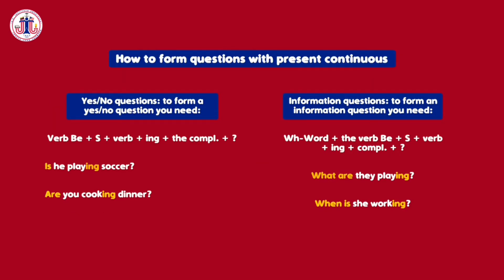How to form yes/no questions with present continuous: you need the verb 'be' plus subject plus the verb plus -ing plus the complement. For example: 'Is she playing soccer?' or 'Are you cooking dinner?'